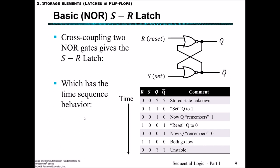This basic NOR SR latch contains two NOR gates, connected in such a way that the output from one of the NOR gates becomes the input to the other NOR gate, and then the second NOR gate's output becomes the input to the first NOR gate. This has some interesting properties that we can exploit in order to have a set or reset signal coming in, and then for that signal to be maintained on the outputs.